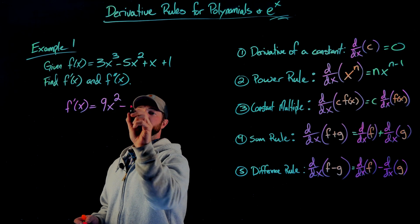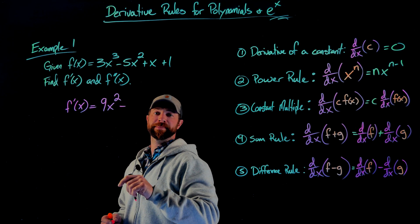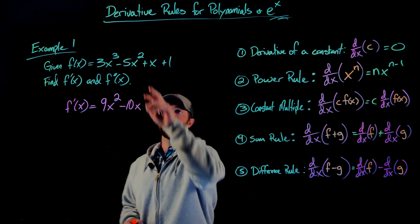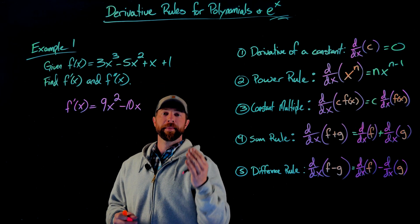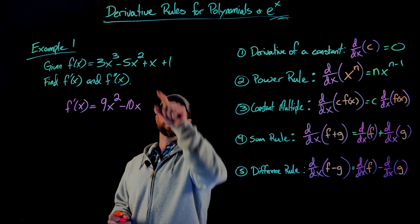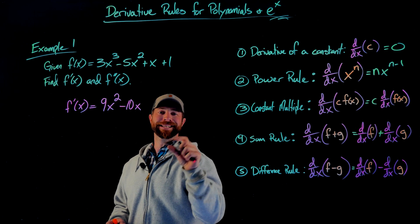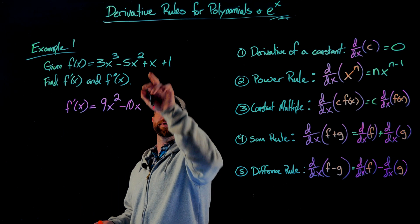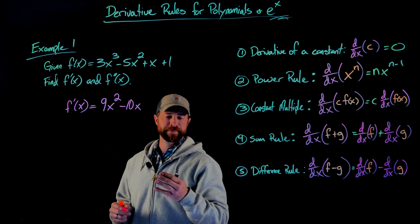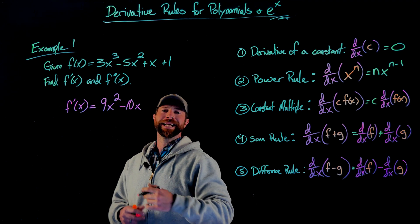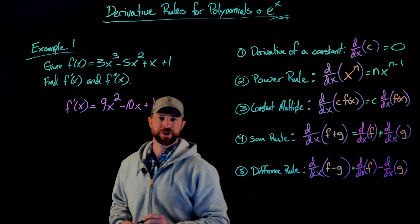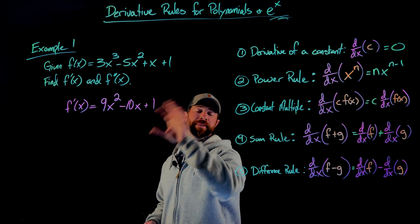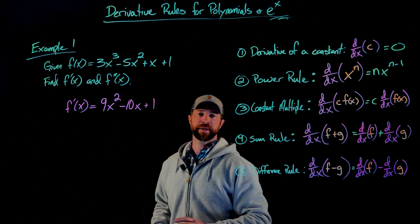Moving on to the next term, the 2 comes down and multiplies by the 5 to give me negative 10x to the first power. For plus x, which is x to the 1, I bring the 1 down and take 1 away, giving x to the 0, which equals 1. The derivative of any linear term is just its coefficient — in this case, 1. Finally, the derivative of the constant 1 is 0. So the first derivative is 9x squared minus 10x plus 1.